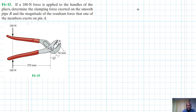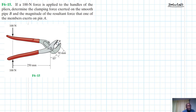Welcome to this screencast. The problem reads: if a 100 Newton force is applied to the handles of the pliers, determine the clamping force exerted on the smooth pipe B, and the magnitude of the resultant force that one of the members exerts on pin A.